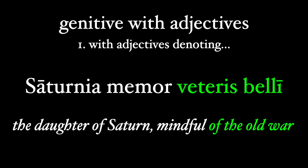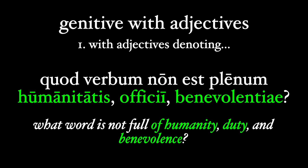Virgil has a famous phrase describing Juno, here represented as the daughter of Saturn: 'Saturnia memor' — mindful — and this is our adjective of memory that takes the genitive 'veteris belli,' of the old war, that's the Trojan War. And one more: Cicero in the Second Philippic asks what word is not full of humanity, duty, and benevolence.